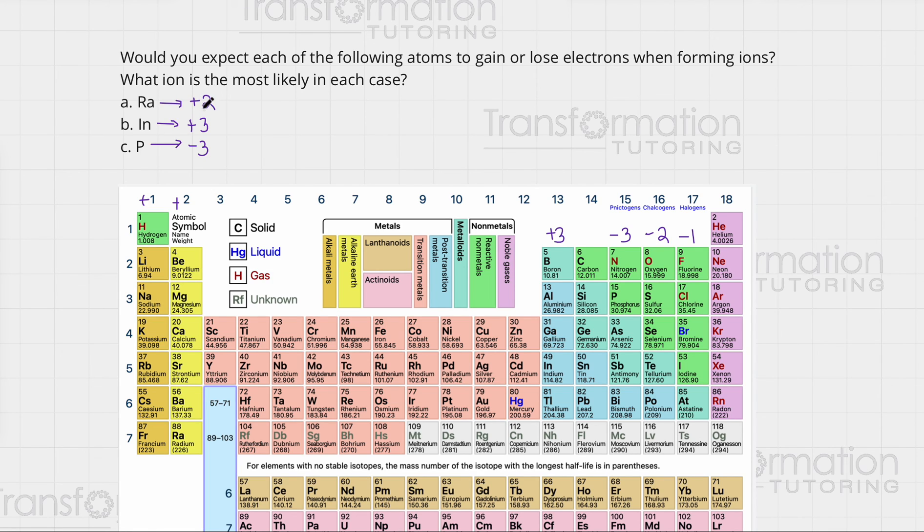Remember, electrons are negative, so when we lose them we have a positive charge. In is going to lose three electrons to become plus 3. Phosphorus is going to gain three electrons to become minus 3. This is Myloci, and I hope you found this video helpful.